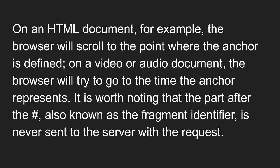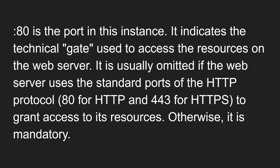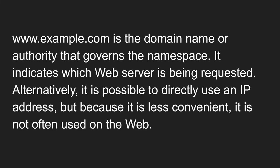So these are all the different parts of a URL structure. The first is the protocol, second is the domain name and port, then the path to the file, query parameters, and finally the fragment. These are the different parts present in a URL. I hope you understood the URL structure. If you have any doubts or suggestions, please post in the comments below, and if you like this video please subscribe to my channel. Thank you.